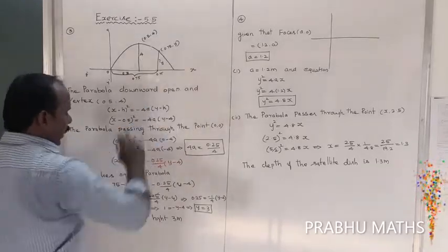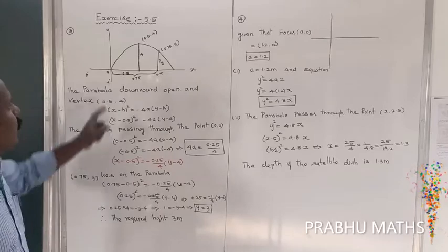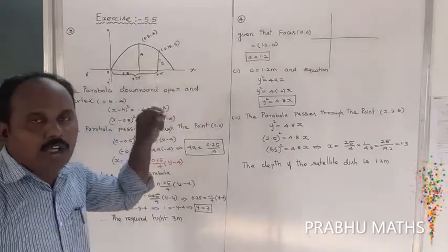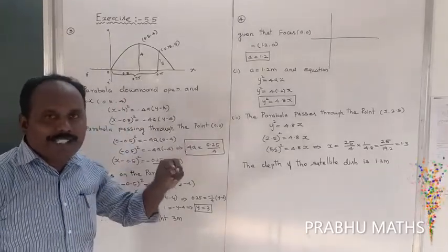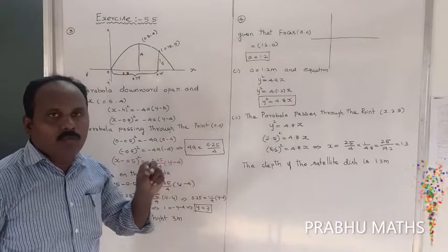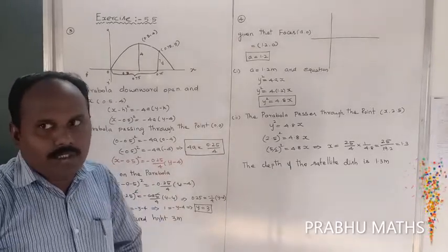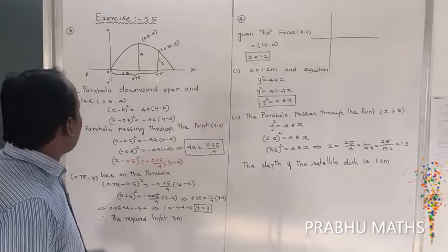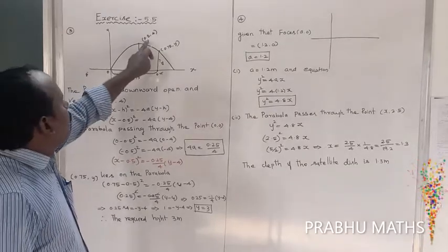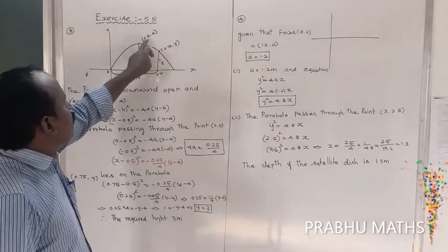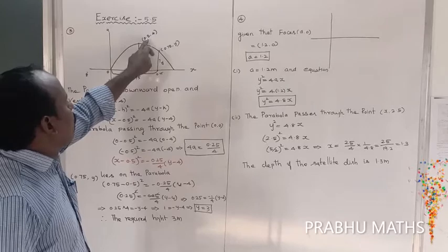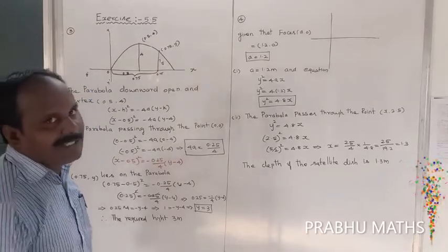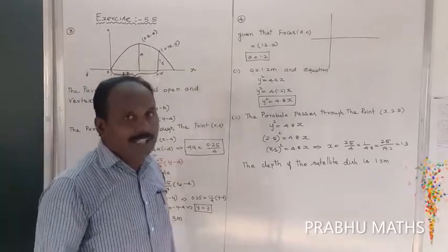This diagram shows a downward-opening parabola. A downward-opening parabola has the equation x² = −4ay. The vertex point is (0.5, 4).